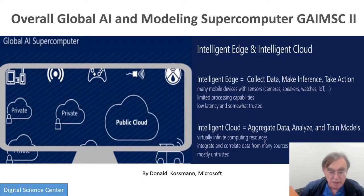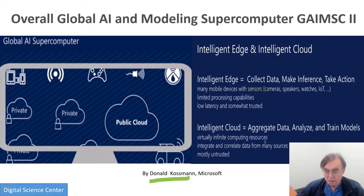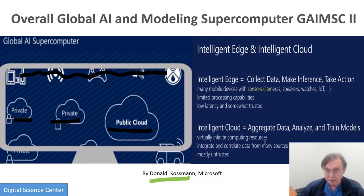Here is Donald Koosman, head of the Microsoft Research Center, who gave this talk and announced the global AI supercomputer. It features the intelligent edge and the intelligent cloud, data at the edge, as a distributed data system or grid. The intelligent cloud aggregates the data, analyzes and trains models, while the edge tends to make inferences. There's a mix of private and public clouds, with edge devices shown at the top.